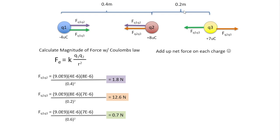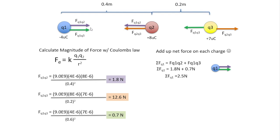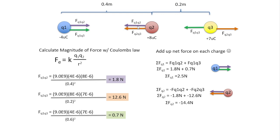Now that we have all of these magnitudes, we can add them up to find the net force on each charge. For charge 1, both forces point to the right, so we add them together and get a net force of 2.5 newtons. For Q2, both forces point to the left — in physics, left is considered negative — so the net force is negative 14.4 newtons. Lastly, for Q3, one force points to the right and one to the left. The positive force is F_Q2Q3 and the negative force is F_Q1Q3 — adding those together, the net force is 11.9 newtons.